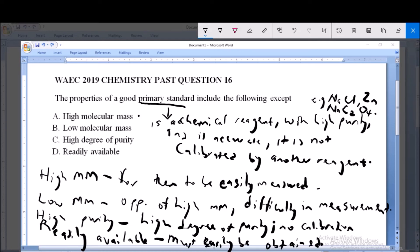Now from the definitions we are giving, we see that low molecular mass will make the standard to be difficult in measuring. Therefore, low molecular mass is not a good property for a primary standard to have and therefore the answer is B, low molecular mass.